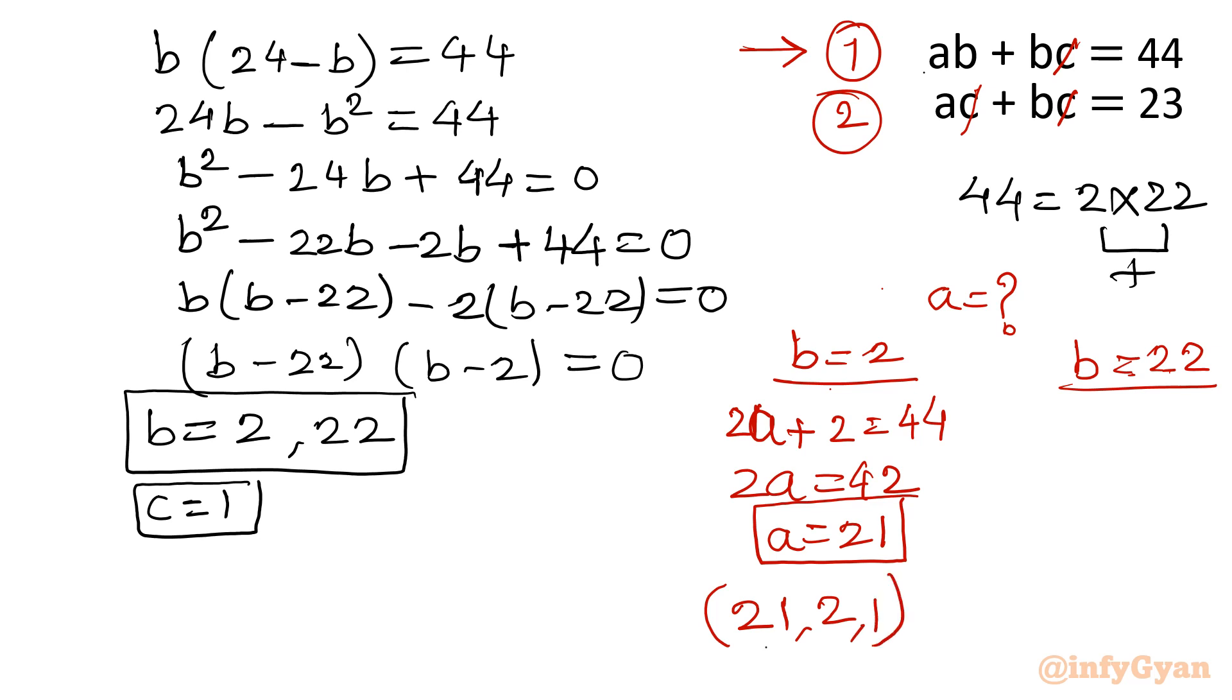Come to b equal to 22. So it will be 22a plus 22 is equal to 44. 22a equal to 22. A will be equal to 1. That means second triplet is 1, 22, 1.